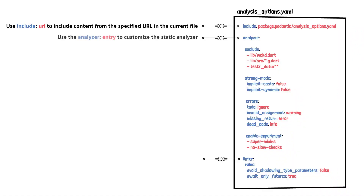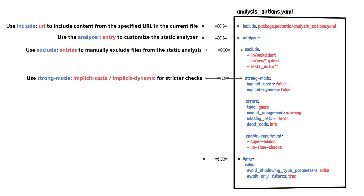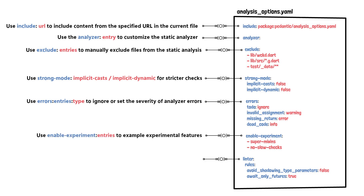The analyzer field provides a respectable amount of customization to our static analyzer. For example, we can enable stricter type checks, exclude files inside of which we don't want the analyzer to do its job, ignore specific rules while also changing the severity of them, and we can also enable some experimental features. Inside the linter field, you can provide a list containing some of the lint rules I showed you earlier. However, as you saw, this part was already included with the pedantic package we added at the top of our analysis_options.yml file.